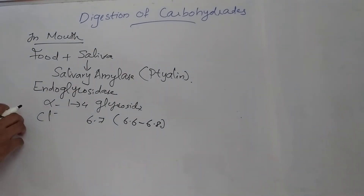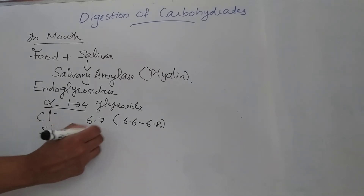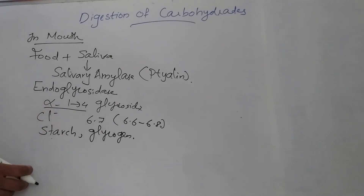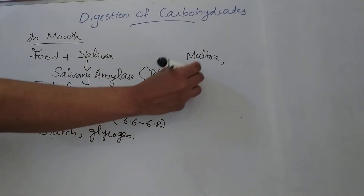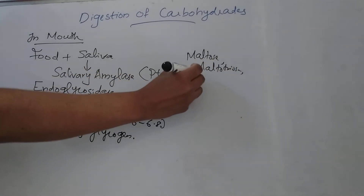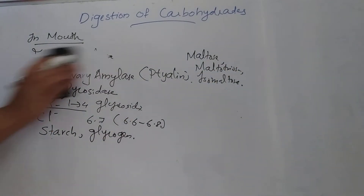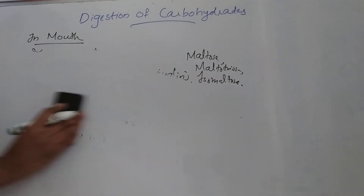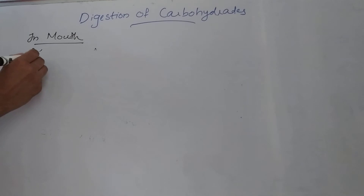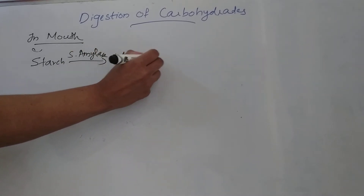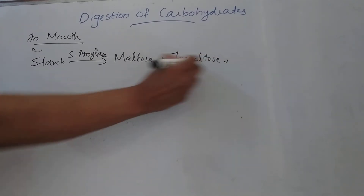This enzyme hydrolyzes alpha-1,4 glycosidic linkages in polysaccharides like starch and glycogen, producing smaller molecules like maltose, maltotriose, and isomaltose.